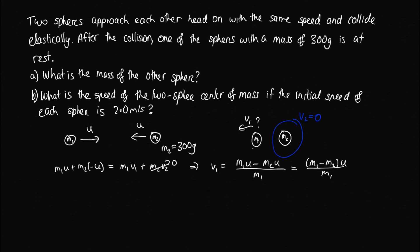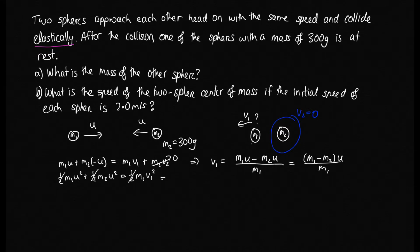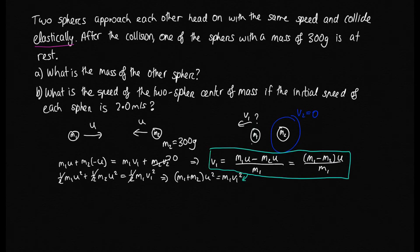Since the collision is elastic, we apply conservation of kinetic energy: ½M1U² + ½M2(−U)² = ½M1V1². The minus sign disappears when squared, so it's still U². Since V2 = 0 we omit that term. The halves in every term cancel, giving: M1U² + M2U² = M1V1², or (M1 + M2)U² = M1V1².